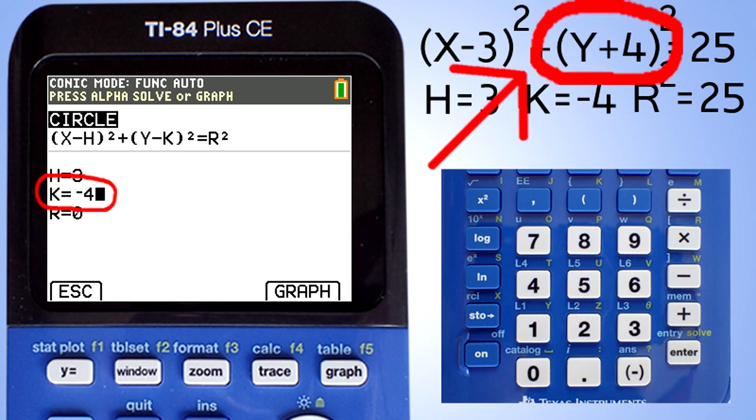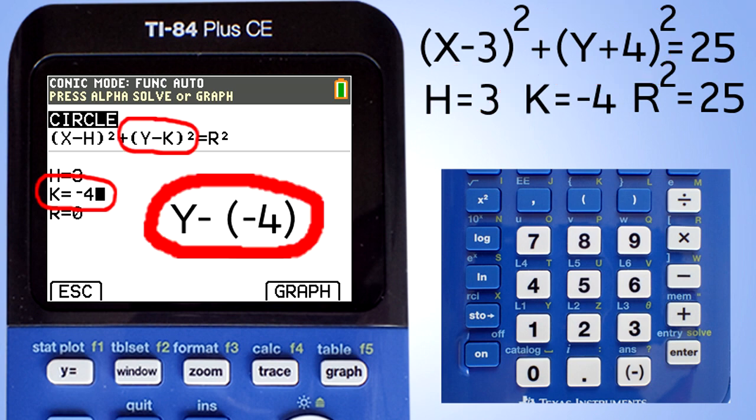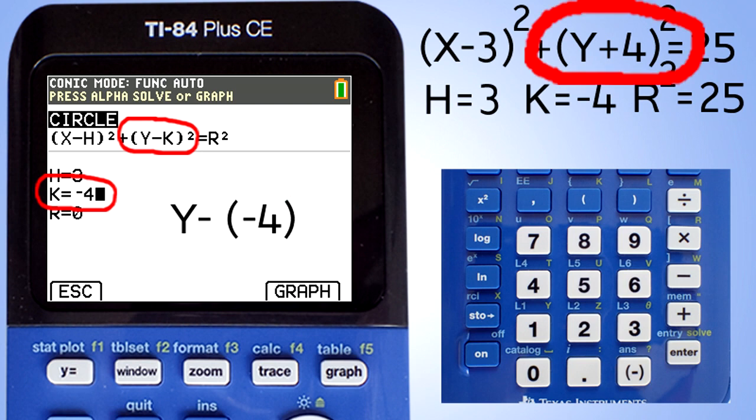But Rob, why use a negative 4? It looks like a positive 4. Well, the equation is Y minus a negative 4, and a negative times a negative is a positive. That is why in the equation it is Y plus 4.